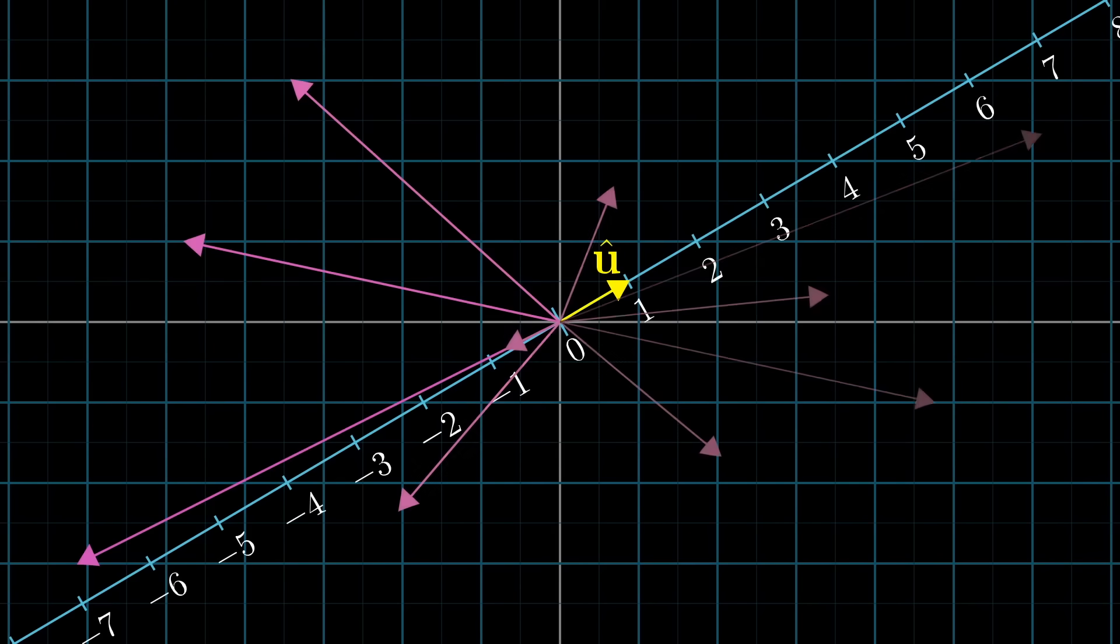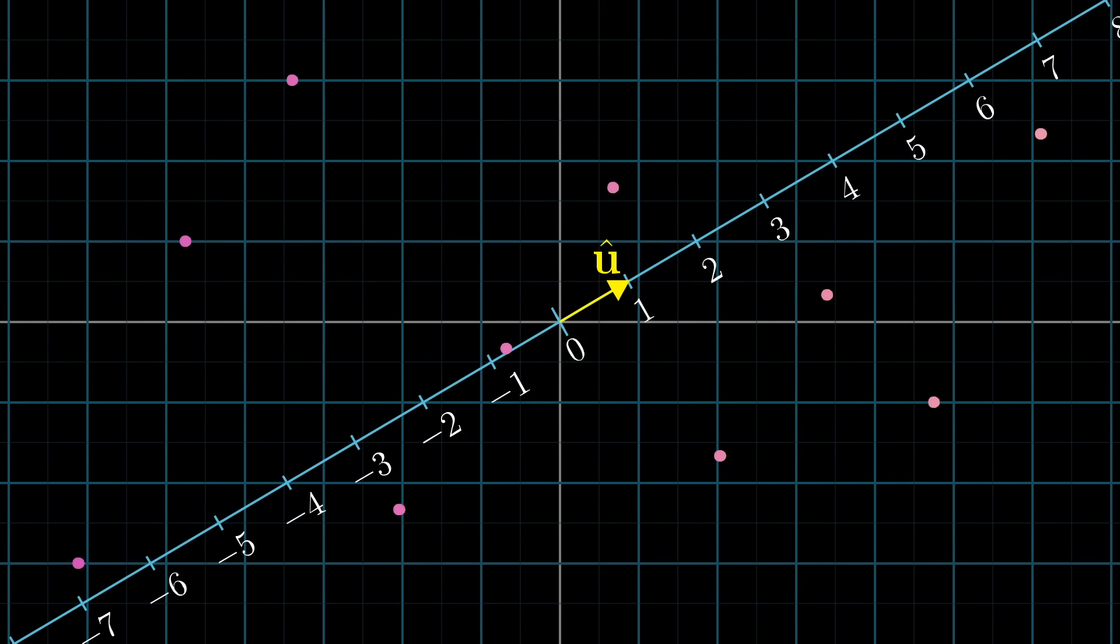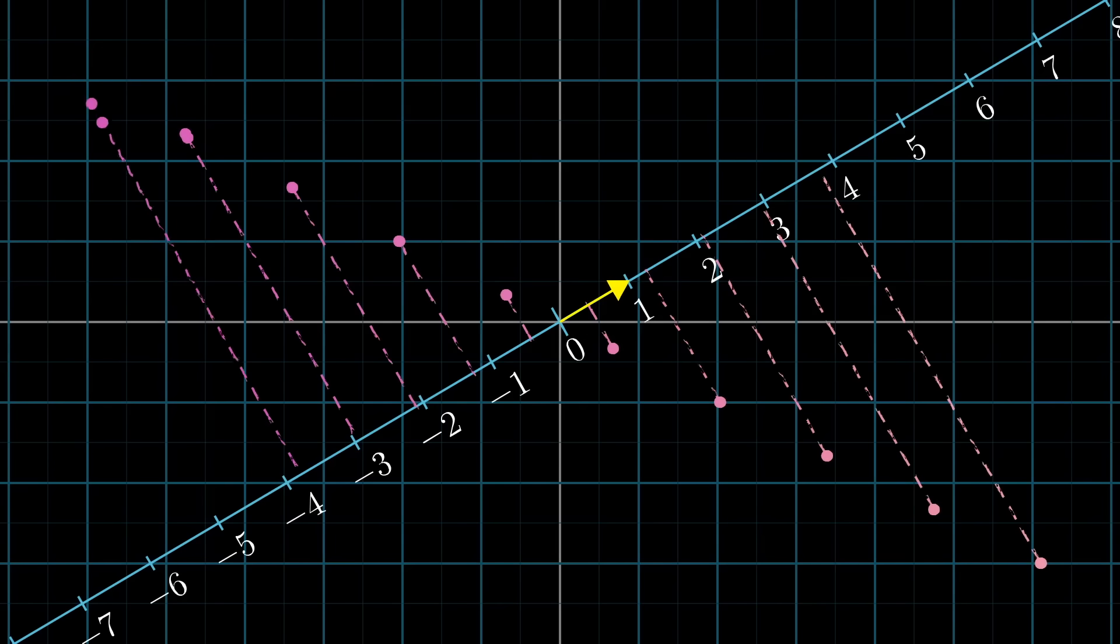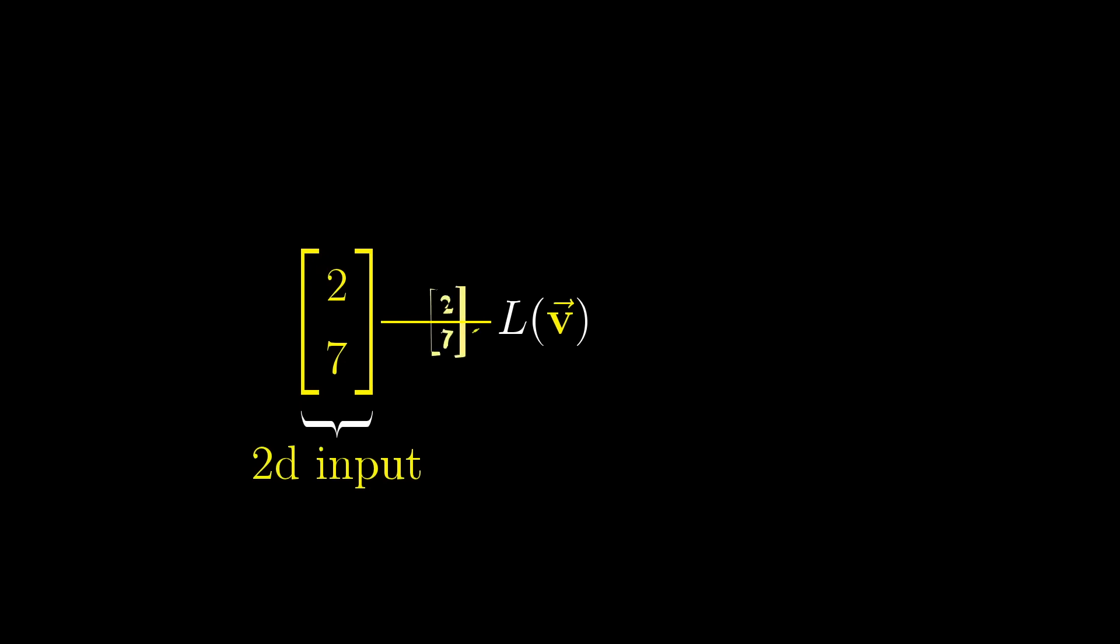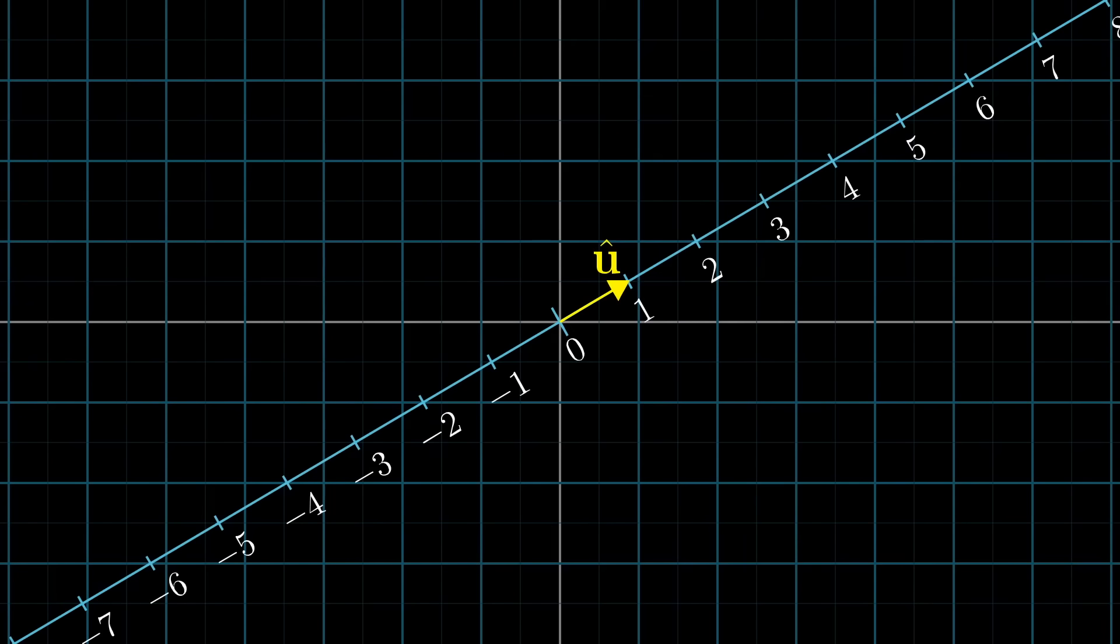If we project 2D vectors straight onto this diagonal number line, in effect, we've just defined a function that takes 2D vectors to numbers. What's more, this function is actually linear, since it passes our visual test that any line of evenly spaced dots remains evenly spaced once it lands on the number line. Just to be clear, even though I've embedded the number line in 2D space like this, the outputs of the function are numbers, not 2D vectors. You should think of a function that takes in 2 coordinates and outputs a single coordinate. But that vector u-hat is a two-dimensional vector, living in the input space. It's just situated in such a way that overlaps with the embedding of the number line.